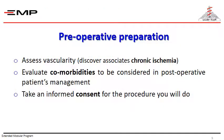Preoperative preparation. In any toe amputation, thorough assessment of the neurovascular status of both limbs is essential — to discover associated chronic ischemia and severe neuropathy. Remember that you are treating a patient and not a toe. Evaluate comorbidities to be considered in postoperative management. Do not forget to take informed consent for the procedure, and explain why you are going to amputate and the expected limited morbidity that may result.